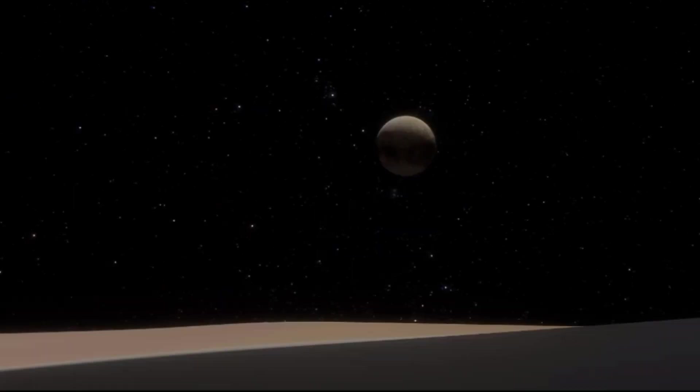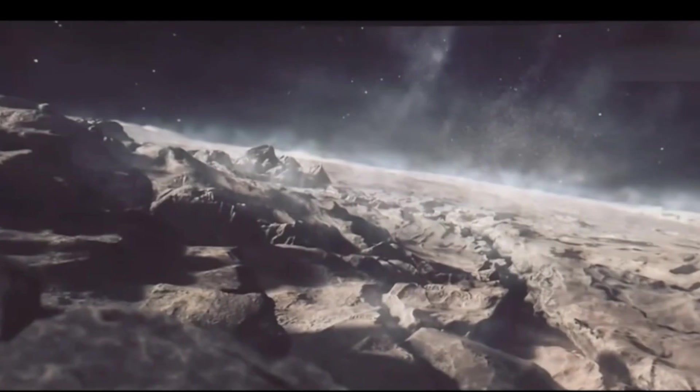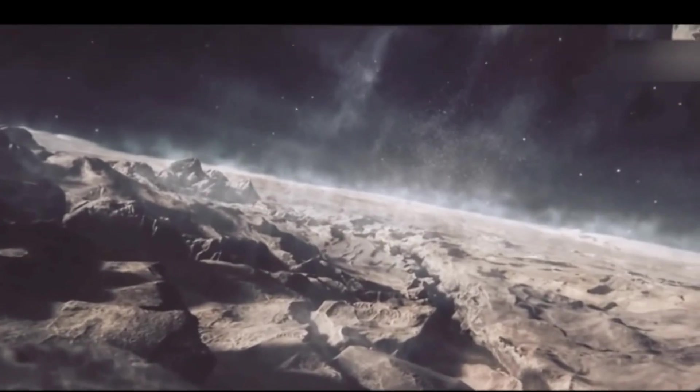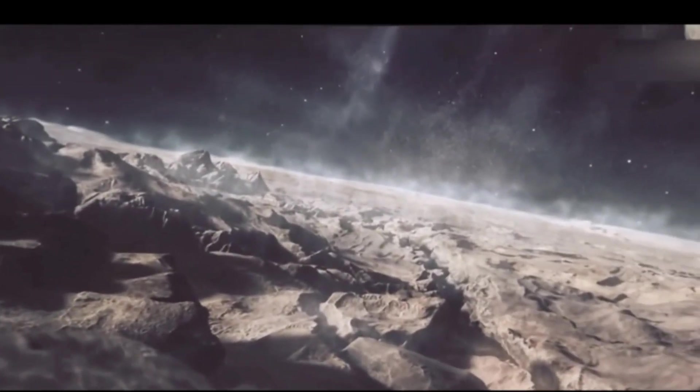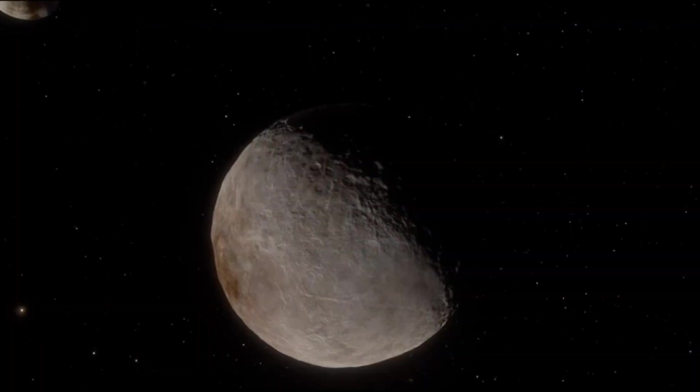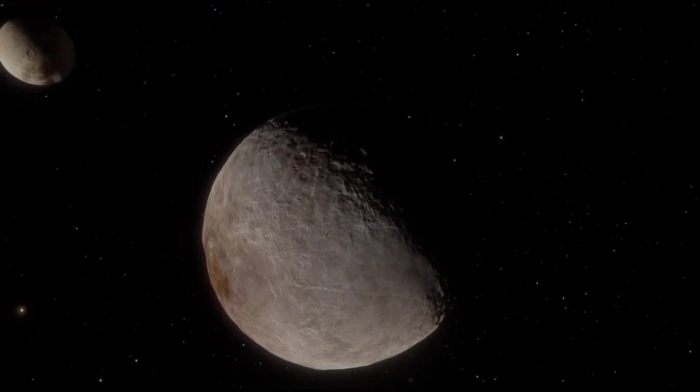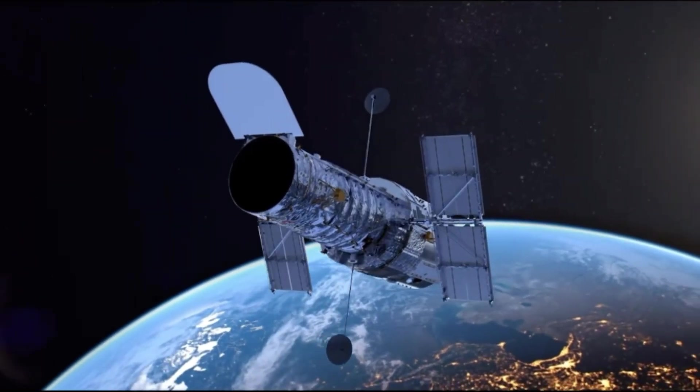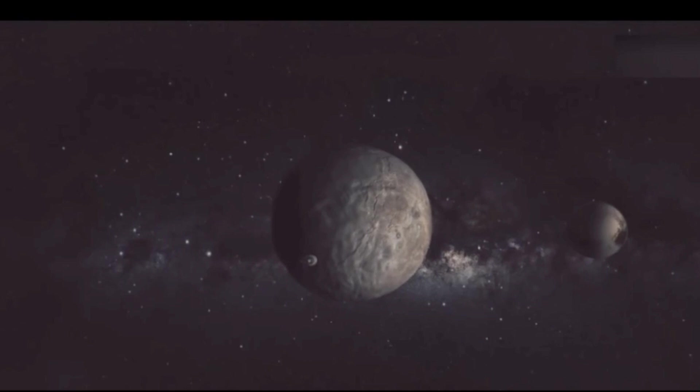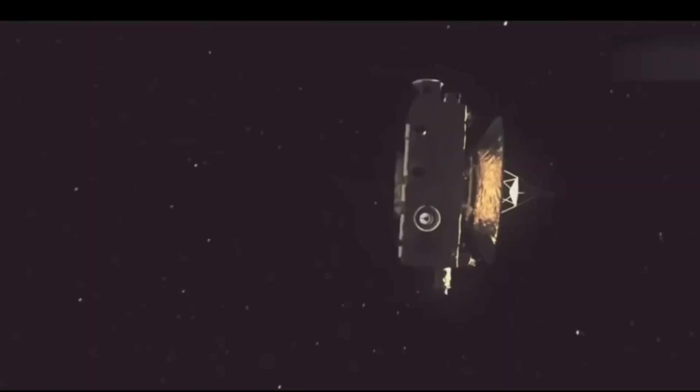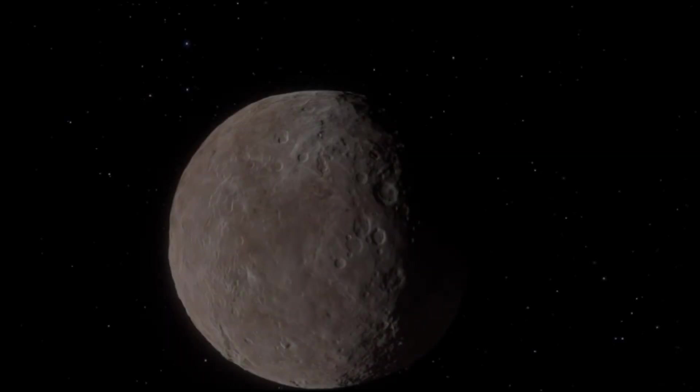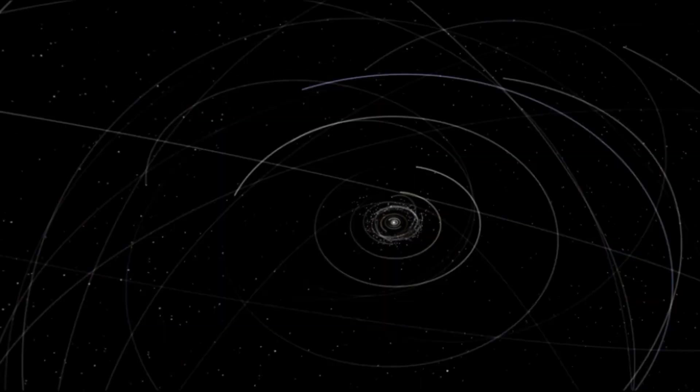The peculiarity of the Pluto-Charon system is that they form a so-called double planet where both bodies revolve around a common center of mass located between them. This is a rather rare astronomical phenomenon, and although Charon is not classified as a separate planet, its size and interaction with Pluto make the system unique. The maximum distance between Charon and the center of Pluto is about 12,177 miles.